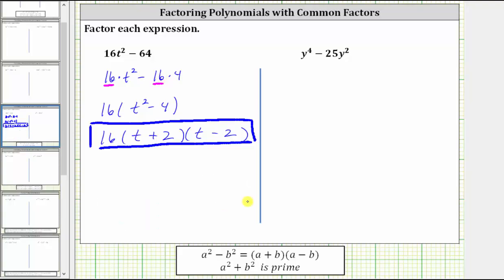For the second example, we have y to the fourth minus 25y squared. Again, both terms are perfect squares, but again, the first step should be to factor out the greatest common factor, which in this case is y squared. And again, if it's helpful, we can write y to the fourth as y squared times y squared minus 25y squared is 25 times y squared.